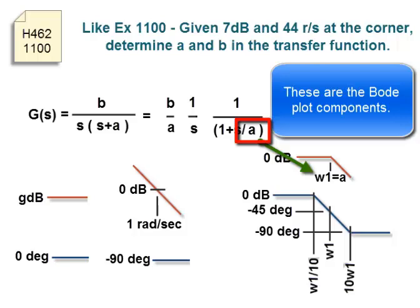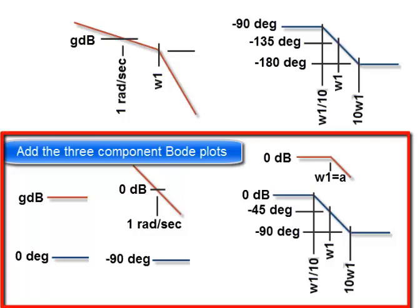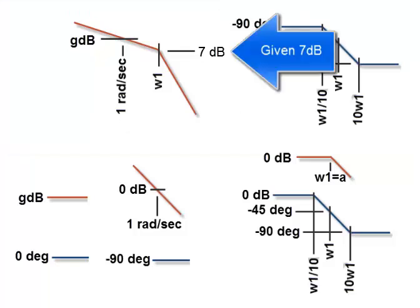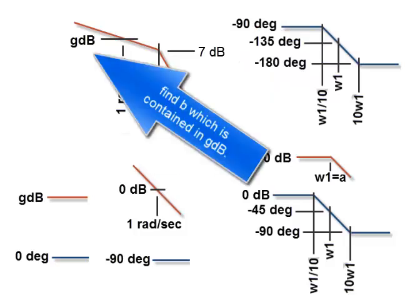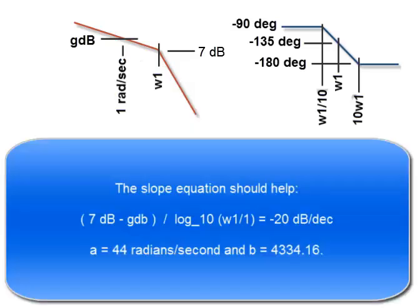Add the three component Bode plots to make the total Bode plot. Given 7 dB at the corner and 44 radians per second, find B, which is contained in G dB. The slope equation should help.